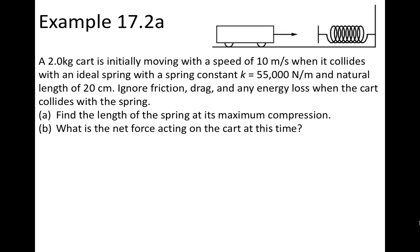So let's look at this example. Here we have a 2 kg cart initially moving with a speed of 10 meters per second, and then it collides with an ideal spring with a spring constant of 55,000 newtons per meter, and a natural length of 20 centimeters. If we are ignoring friction, drag, and any other energy losses when the cart collides with the spring, in part A, we are asked to find the length of the spring at its maximum compression.